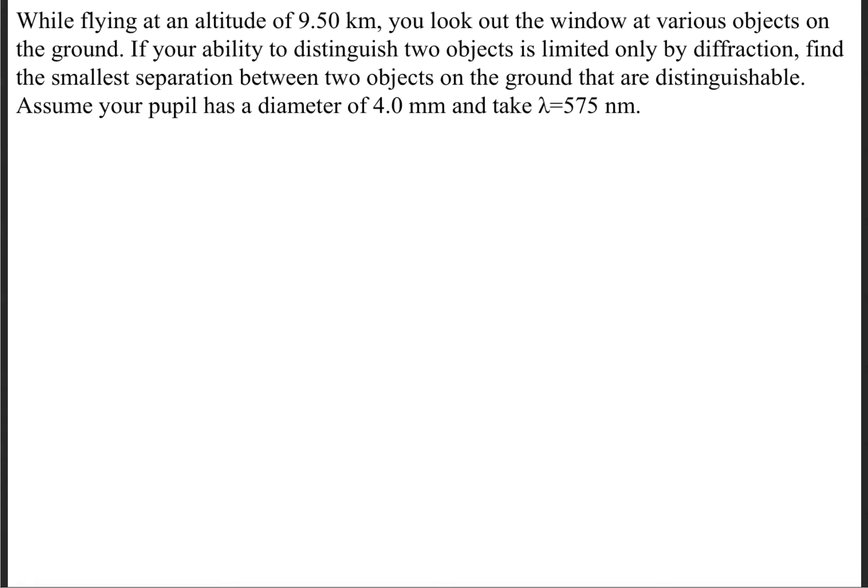To begin solving this question, we're going to use the Rayleigh criterion, which is this formula right here. The next thing we'll do is make our sine theta equals tangent theta approximation. This will allow us to rewrite the Rayleigh criterion into this form: h over L equals 1.22 times lambda over a.